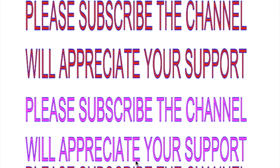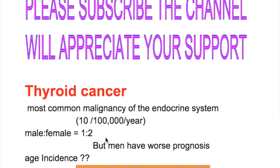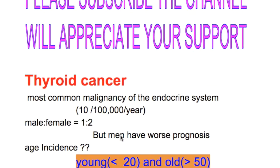In this video we'll discuss carcinoma of the thyroid gland. Thyroid cancers are the most common malignancy of the endocrine system. It occurs in 10 per 100,000 per year. Male-female ratio is 1 to 2, but men have a worse prognosis.